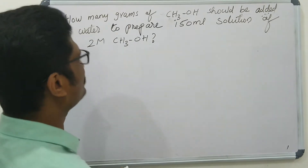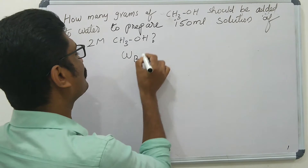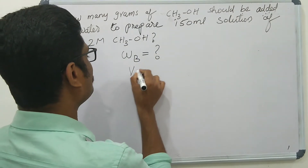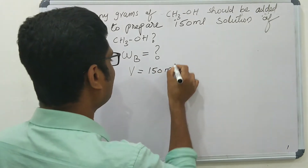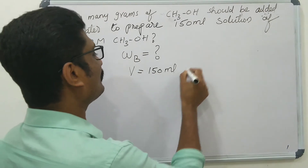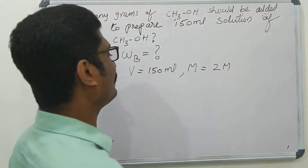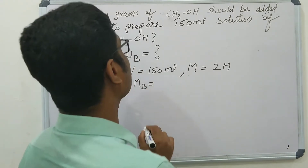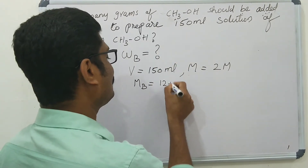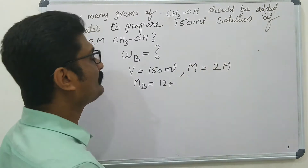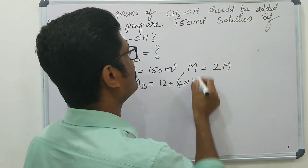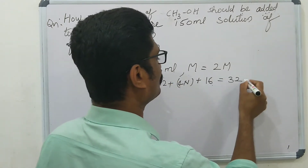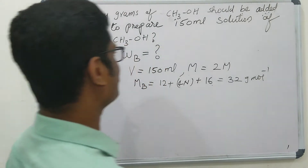We need to find the mass of solute to be added to water. The volume of solution is 150 ml and the molarity of solution is 2 mol per liter. The molar mass of CH3OH: carbon is 12, plus 4 hydrogen atoms (4×1), plus oxygen 16. So 12 + 4 + 16 = 32 gram per mol is the molar mass of CH3OH.